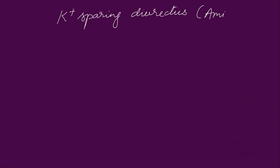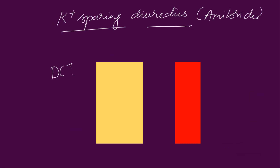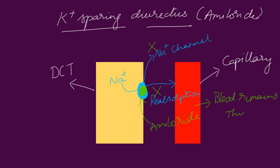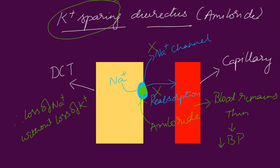Now, the potassium-sparing diuretics. They inhibit sodium reabsorption in the distal convoluted tubule by binding to sodium channels. As you know, in the distal convoluted tubule, sodium is reabsorbed into the capillaries. These potassium-sparing diuretics block the sodium channels and inhibit the flow of sodium — the blood remains thin and the blood pressure does not increase. Thereby, they increase the loss of sodium through urine without depleting potassium.